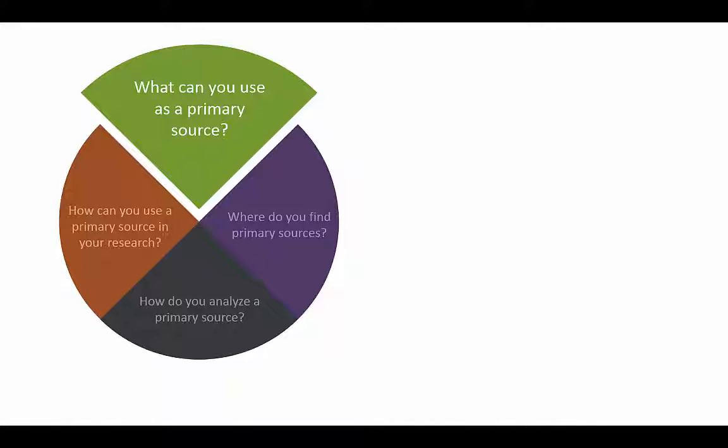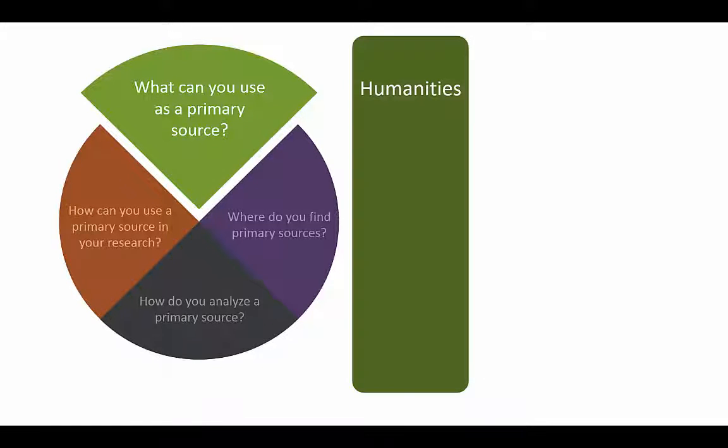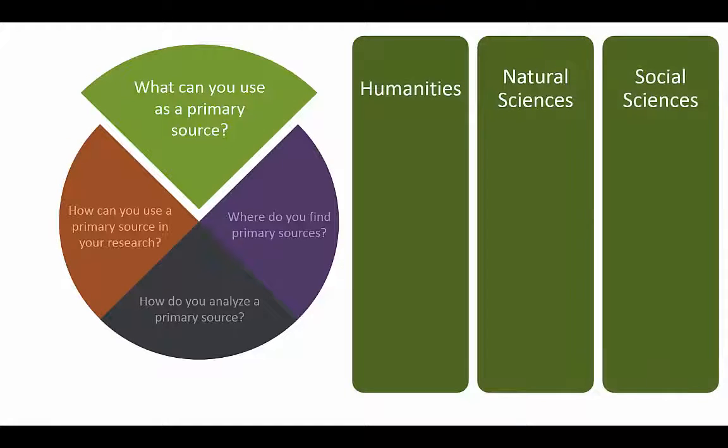Let's take a quick look at some types of primary sources you might use if you are doing research in the humanities, the natural sciences, and the social sciences.